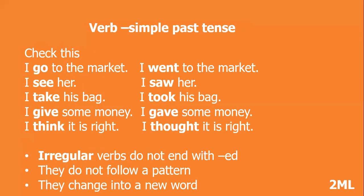The first set of sentences are in the simple present, and the second set is in the simple past tense. I go to the market — I went to the market. I see her — I saw her. I take his bag — I took his bag. I give some money — I gave some money. I think it is right — I thought it is right.